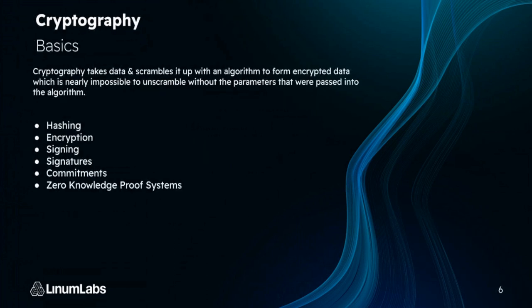There are a few basic cryptographic concepts you need to know before we dig into zero knowledge. The basic idea is that cryptography takes data and scrambles it with an algorithm to form encrypted data, which is impossible to unscramble without the parameters that were passed into the algorithm — making it unreadable if intercepted. We'll look at hashing, encryption, signing, signatures, commitments, and zero knowledge proof systems.